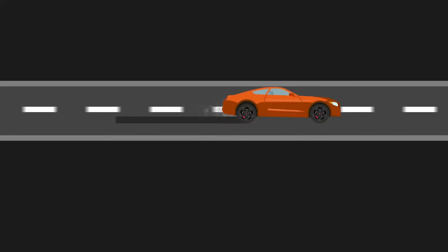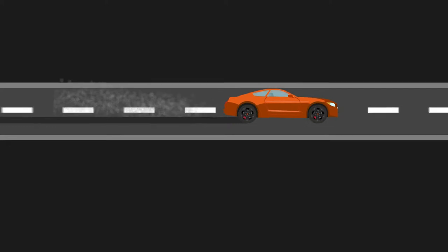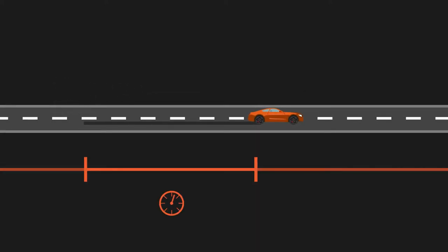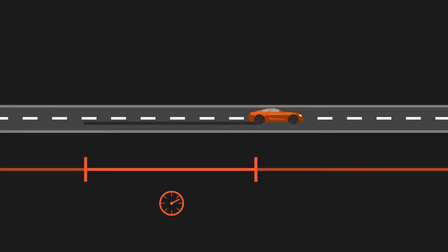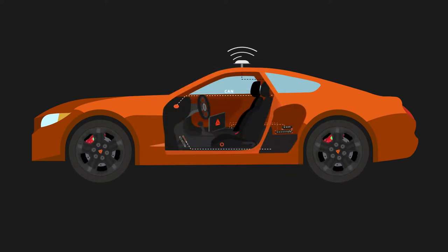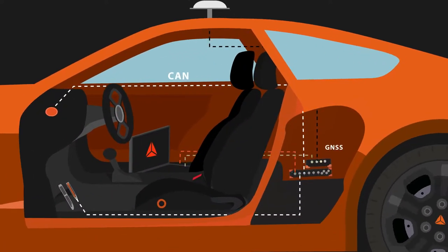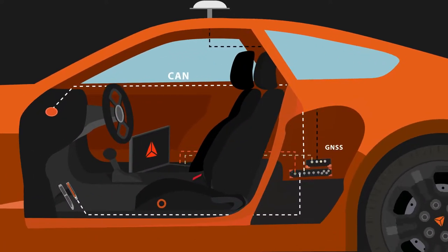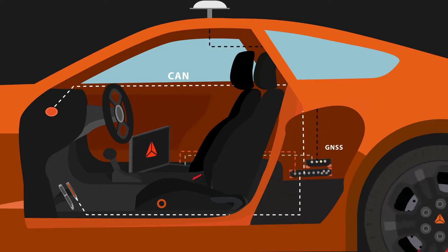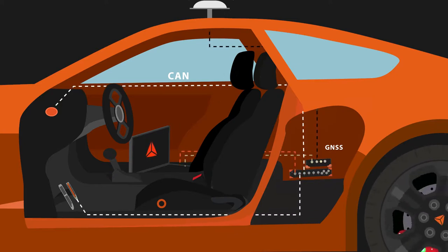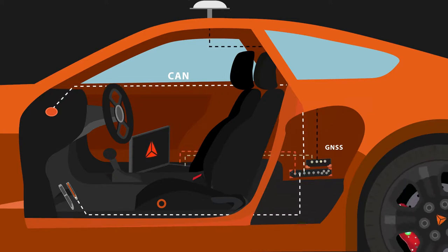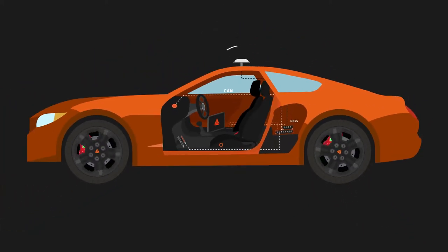So, what is a brake test? We can simply define it as a measurement of the time and the distance from the moment when you touch the brake pedal to when the vehicle completely stops. For a brake test, you need to equip your vehicle with a sensor on a brake pedal and connect a GNSS device to measure the accurate velocity, distance and position of the vehicle.